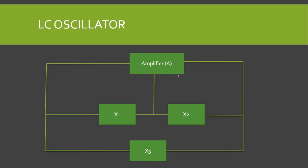We have two types of LC oscillators: the Hartley oscillator and the Colpitts oscillator. We have reactive elements X1, X2, and X3. When X1 and X2 are inductive elements and X3 is a capacitive element, we have a Hartley oscillator. When X1 and X2 are capacitive elements and X3 is an inductive element, it is called a Colpitts oscillator. In the Colpitts oscillator we have two capacitors and one inductor; in the Hartley oscillator we have two inductors and one capacitor.